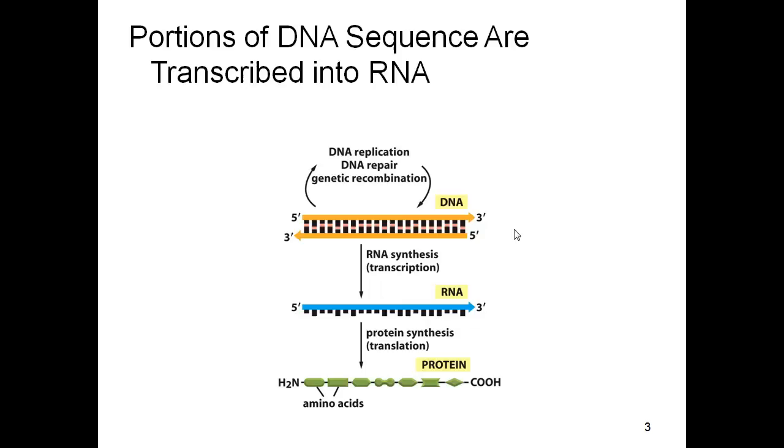So here we see again the central dogma: DNA makes RNA makes protein. We've studied previously the process of DNA replication, which is DNA making DNA. Today we'll talk about transcription, DNA going to RNA. And a little later we'll talk about translation, RNA going to protein.